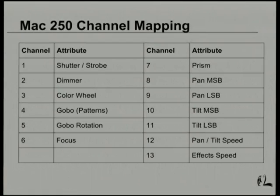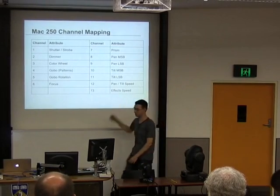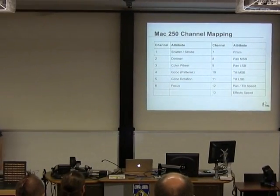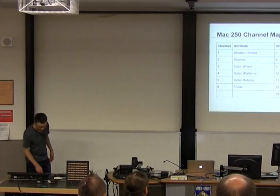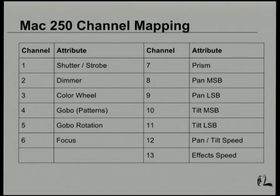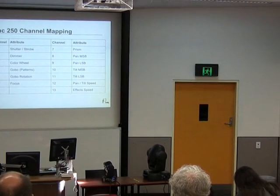To give a demo of how this maps: I have two automated fixtures here — a MAC 101 and a MAC 250, cousins to the one I had on screen. On the control desk we can start toggling channels. Shutter/strobe is the first channel, which I've set so the light actually comes on, and we can bring up the dimmer. Now we're controlling it. We can select our color.